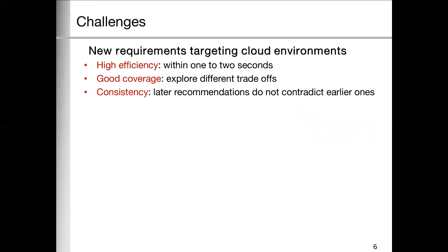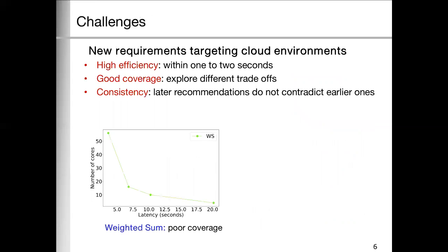There are some existing MO algorithms. However, targeting the cloud environment will have some new requirements. For example, high efficiency, good coverage, and consistency. As we can see, weight sum has a poor coverage issue. In this example, it can only find four different Pareto points, while the other algorithms can find much more.